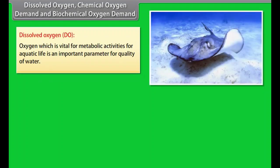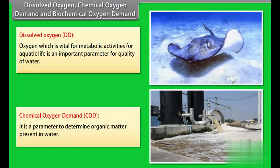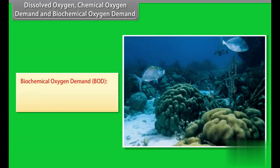Dissolved oxygen, chemical oxygen demand, and biochemical oxygen demand. Dissolved oxygen, which is vital for metabolic activities for aquatic life, is an important parameter for quality of water. For example, drinking water contains 4-6 mg of dissolved oxygen per liter. Chemical oxygen demand is a parameter to determine organic matter present in water. Biochemical oxygen demand is also a parameter to determine the quality of water. It is measured by the quantity of oxygen utilized by suitable aquatic microorganisms during a 5-day period.